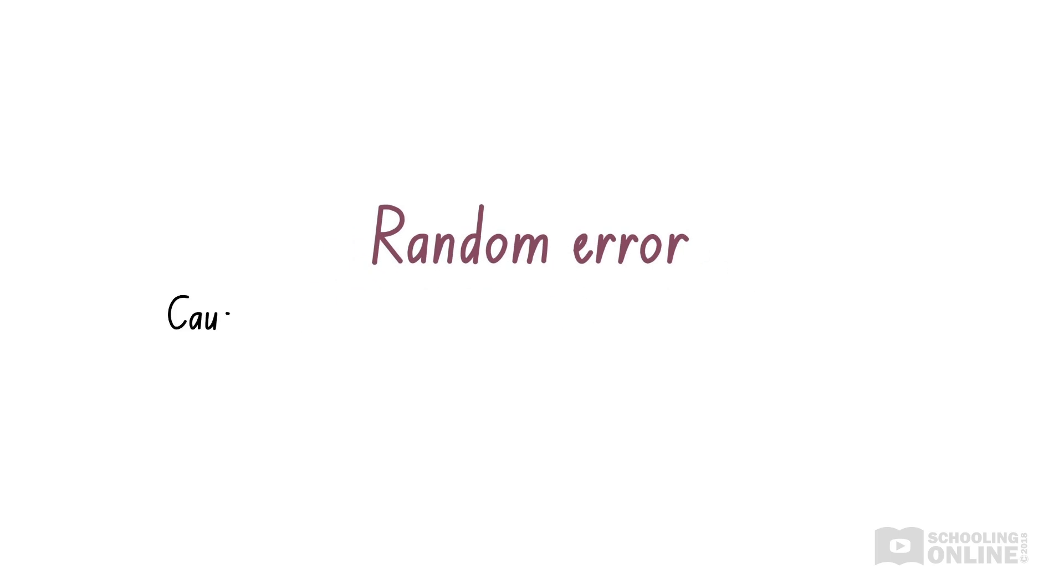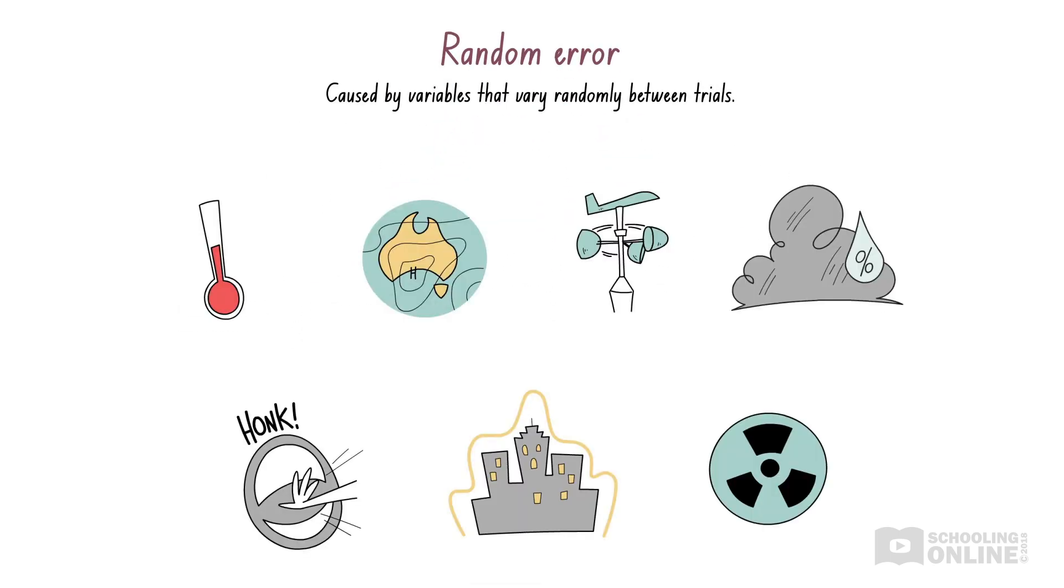So where does this random error come from? As the name implies, it is caused by variables that vary randomly between trials. This includes things like temperature, atmospheric pressure, wind speed, humidity, background noise, ambient light and background radiation.